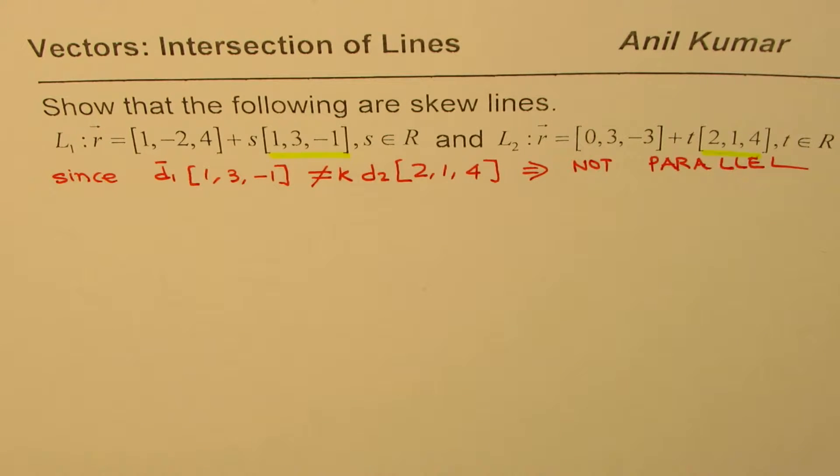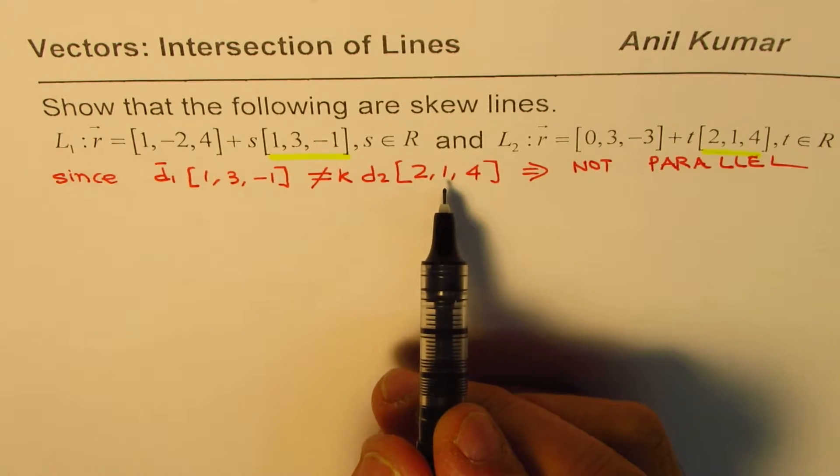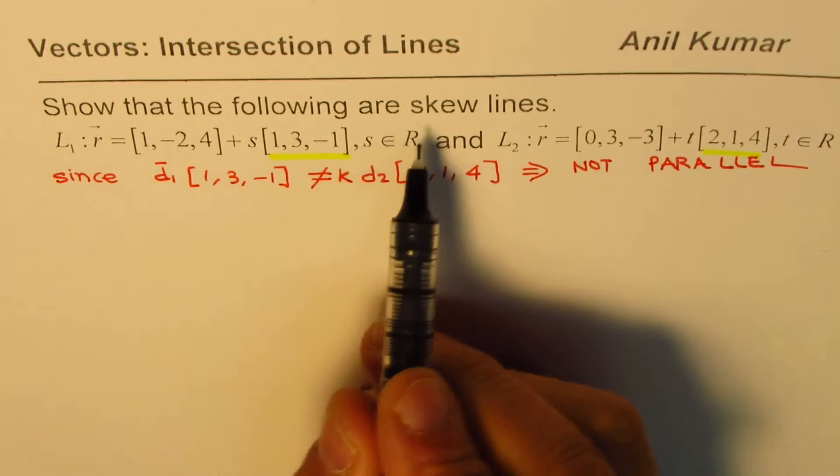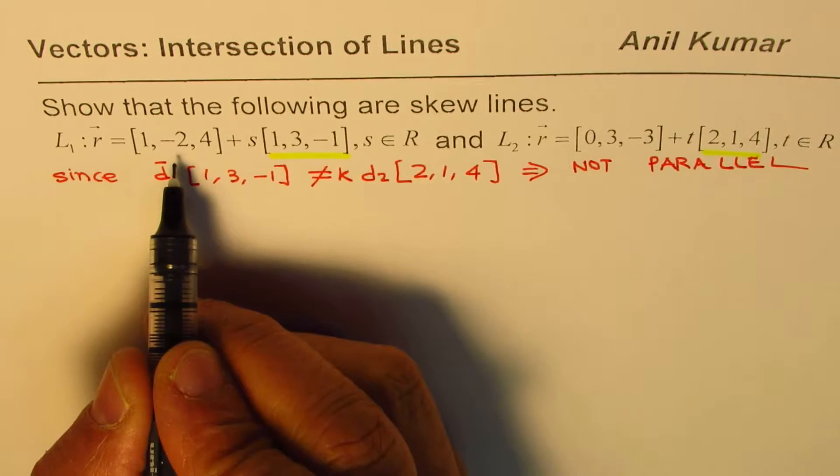Let us see if these are skew lines or not, which we can only find by trying to find the point of intersection. For each line we'll write down their parametric form.